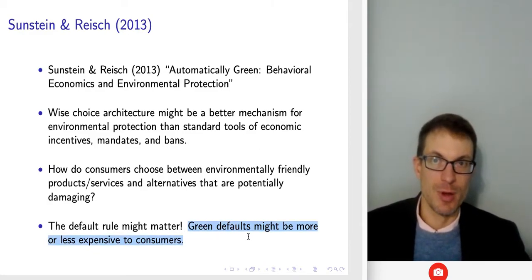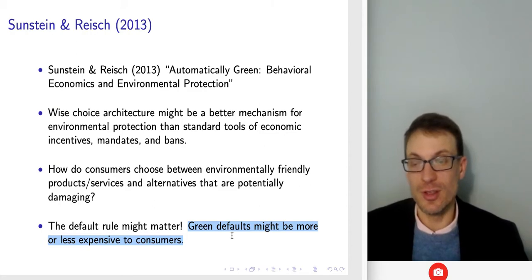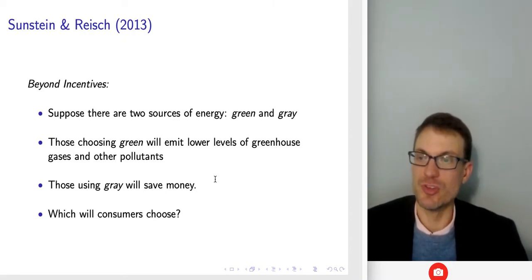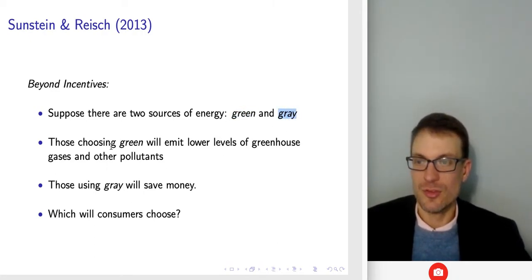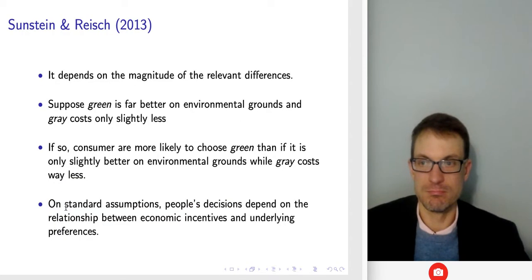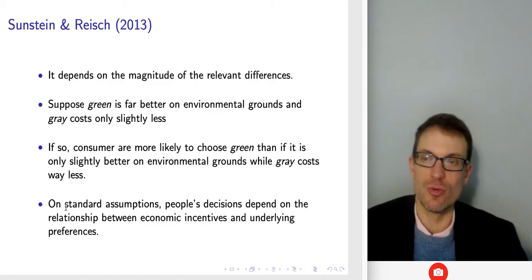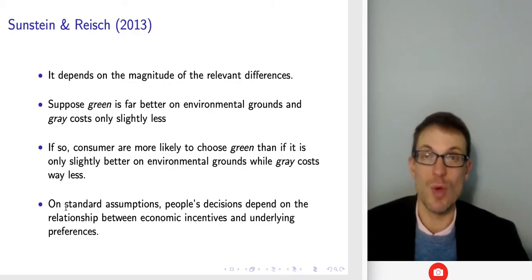The green default could be more expensive or less expensive to consumers, and whichever is true really matters for whether we want the green technology. Thinking beyond incentives: suppose we have two sources of energy, green and gray. Those choosing green emit lower levels of greenhouse gases; those using gray will save money. Which consumers choose depends on the magnitude of the relevant differences — if green is far better on environmental grounds and gray costs only slightly less, people will probably choose green.